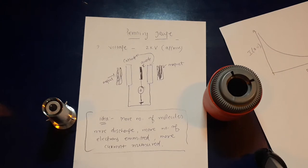The Penning gauge is used to measure very, very low pressure. It can measure up to 10 to the power minus 2 millibar to 10 to the power minus 7 millibar. It's also called a cold cathode gauge.